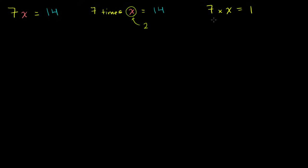You might use a dot to represent multiplication. So you might write 7 · x is equal to 14. But this is still a little unusual. If you have a number multiplying a variable, you'll just write 7x — that literally means 7 times x.